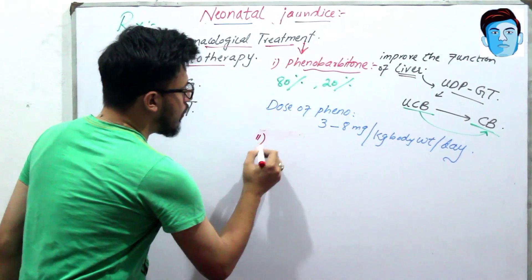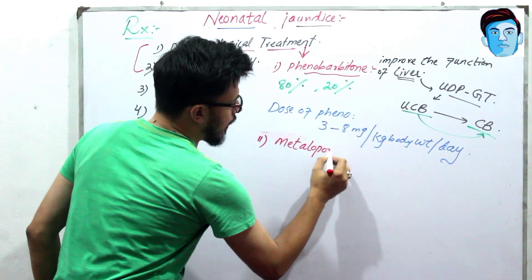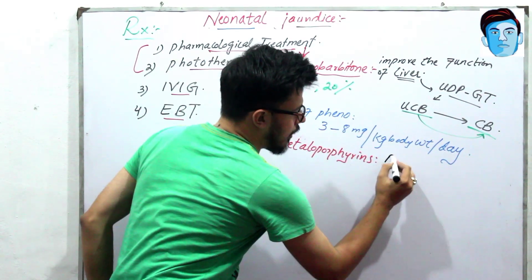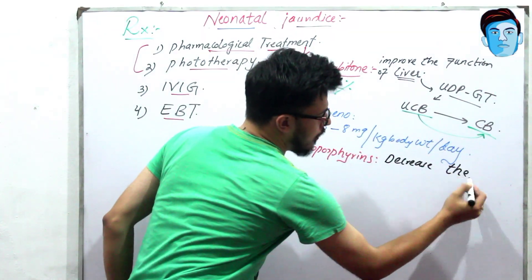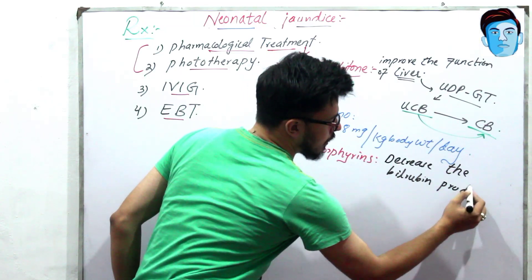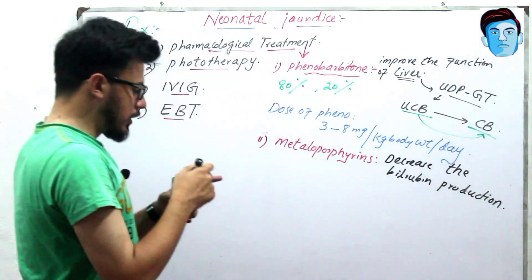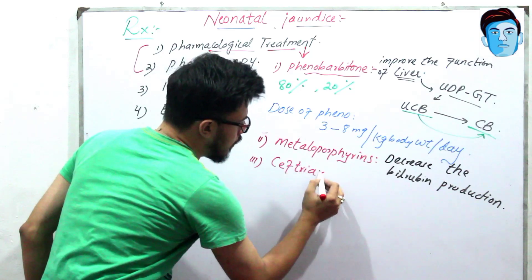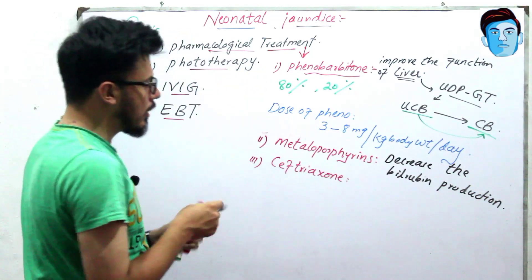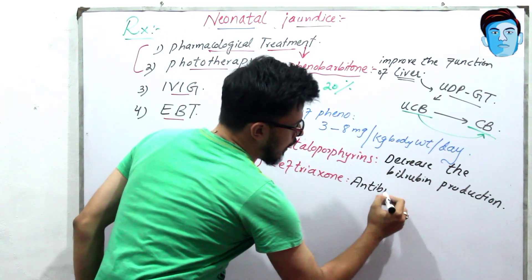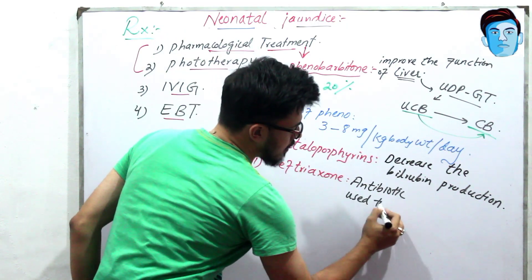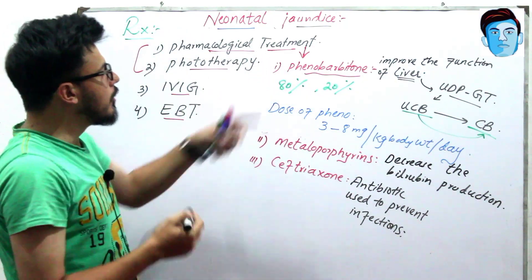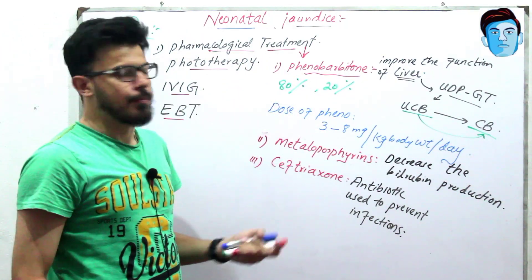There are also metalloporphyrins, which decrease bilirubin production. The third pharmacological option is Ceftriaxone, an antibiotic used to prevent infections. So in pharmacological treatment, we have phenobarbitone, metalloporphyrins, and Ceftriaxone.